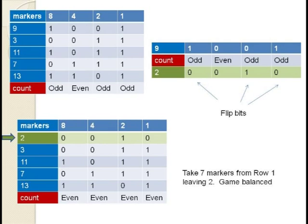Hence, 1, 0, 0, 1 changes to 0, 0, 1, 0, which equals 2. In order to go from 9 markers down to 2, we need to take 7 markers from row 1. This new game will now be balanced.